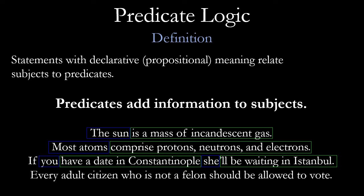Another sentence: 'every adult citizen who is not a felon should be allowed to vote.' This one may be a little bit controversial, but it is a proposition. We can identify its subject — every adult citizen who is not a felon — and the predicate — should be allowed to vote. All of these sentences are propositions, and so they all can be clarified in terms of their subjects and predicates.